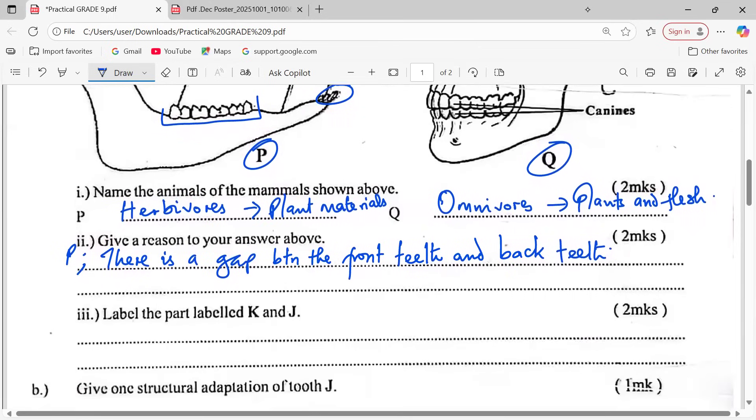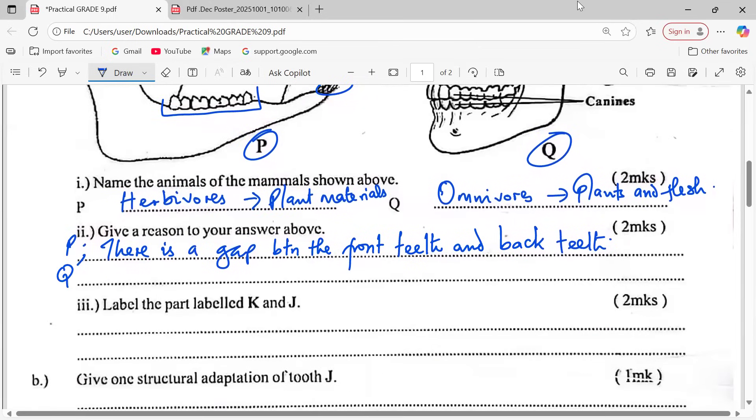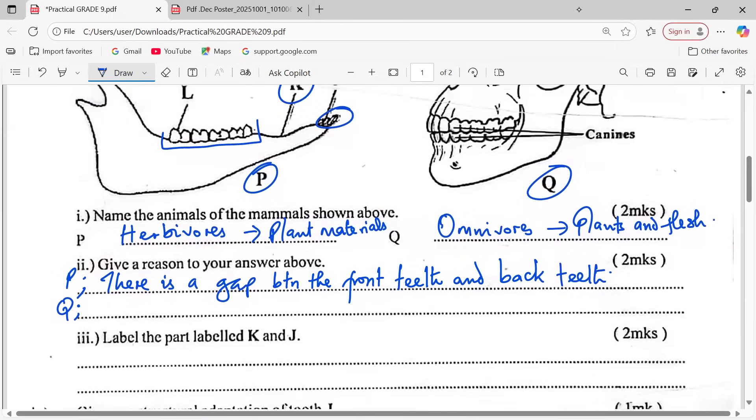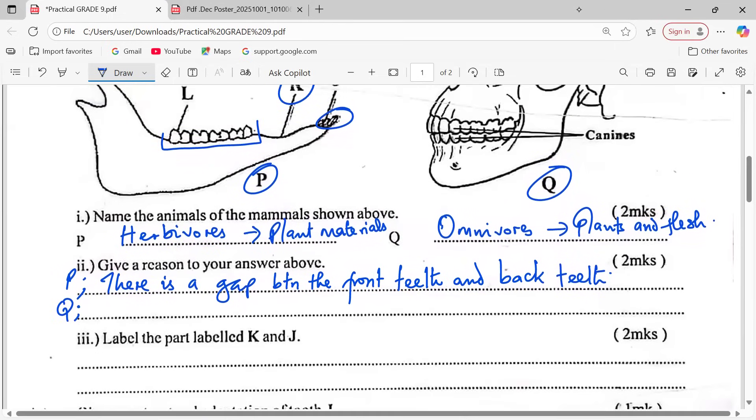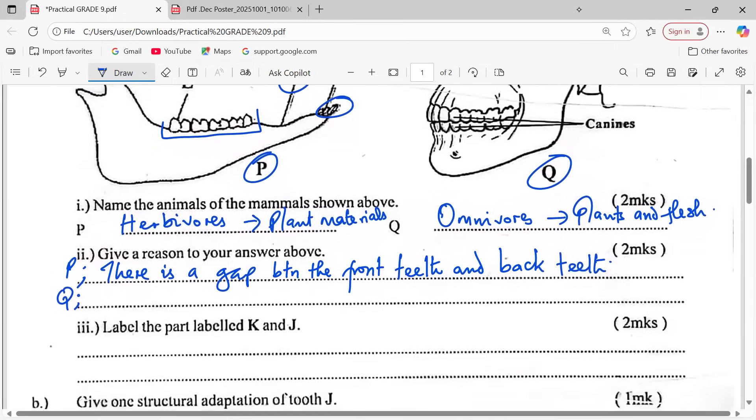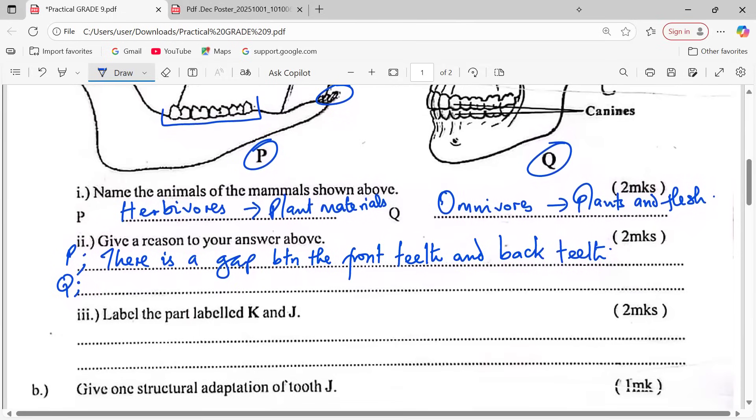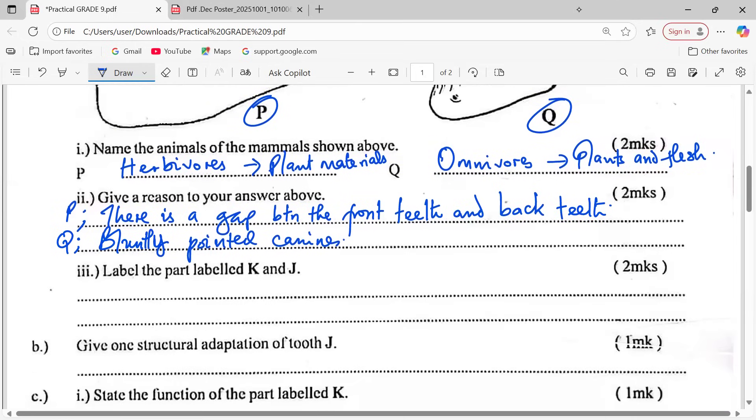This gap is called the diastema. So the diastema is the gap that exists between these teeth. Then for Q, the reason why we think these are omnivores - that is the class actually where human beings belong - you can look at the canines, they are bluntly pointed canines.